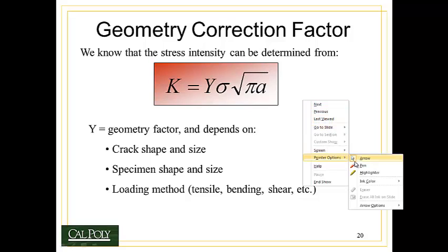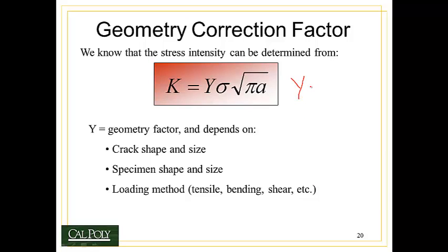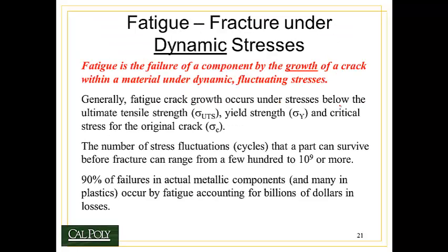So finally, we have the geometry correction factor, Y. Well, Y is typically around the value of one. Y is approximately equal to one. Although it can vary from about 0.8 all the way to 1.25. And it's dependent on a number of factors, which include the shape and size of the crack, the specimen shape and size, and also what the loading method is, whether it's being pulled in tension, bending, shear, or so on. We'd have to look into large manuals to tell us exactly which condition we have and what the correct Y factor to use is. But suffice to say, for most of our applications, we'll either be told what Y is, or we can assume it has a value of approximately one.